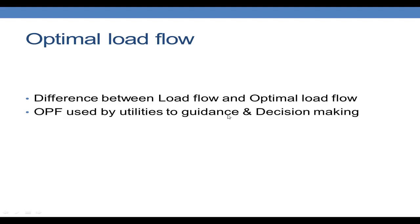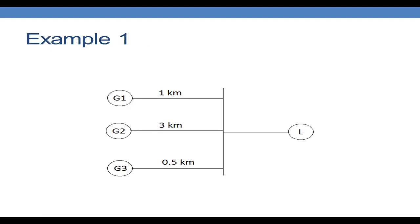Optimal load flow is used by utilities for guidance and decision making. To explain optimal load flow I will use two different examples. In example one, we have three generators connected to a single load. Each generator is capable of managing the load individually, and these three generators have identical capacities, identical fuel cost, and identical turbine systems, but are connected at different distances from the load. Generator G1 is connected about one kilometer away, G2 is three kilometers away, and G3 is 0.5 kilometers from the load.